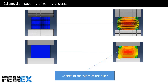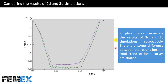This is more accurate. Purple and green curves are the results of 3D and 2D simulations respectively. There are some differences between the results, but the total trend of both curves is similar. You can see that there is little difference between the results.